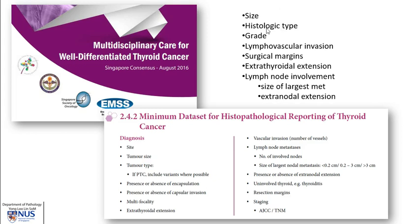Essentially, I've summarized it here. This is what the pathologist can pay attention to that is prognostically important: size, histologic type of tumor, grade if relevant, the presence of lymphovascular invasion, completeness of resection, whether there is extra-thyroidal extension, and whether there is lymph node involvement.